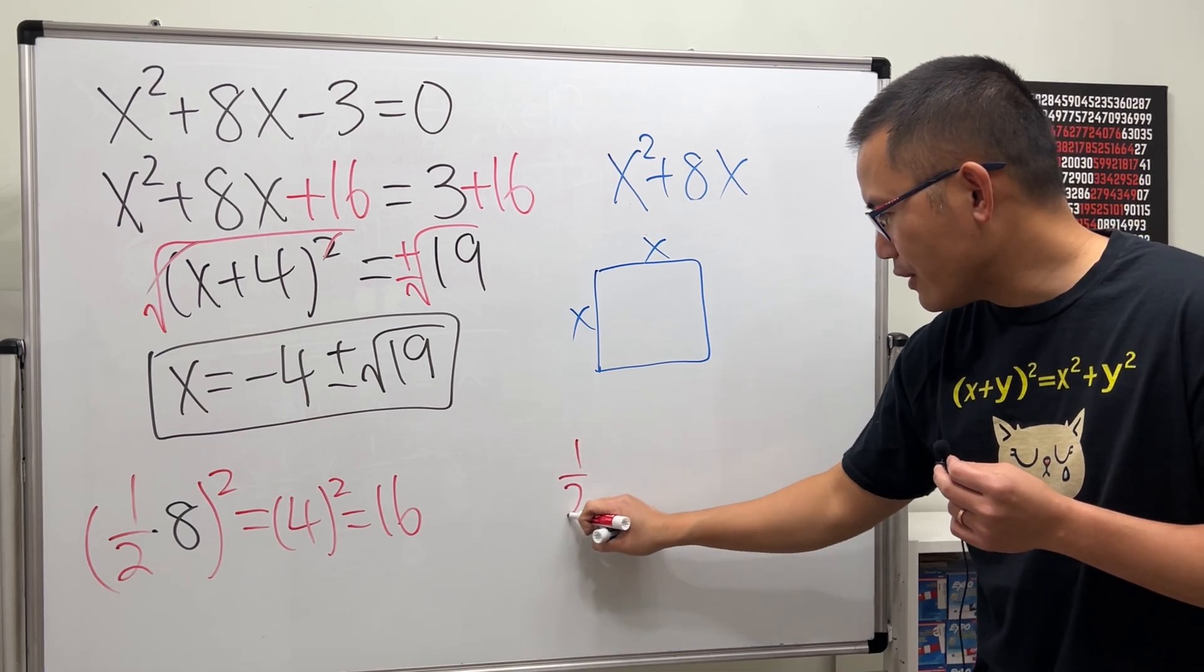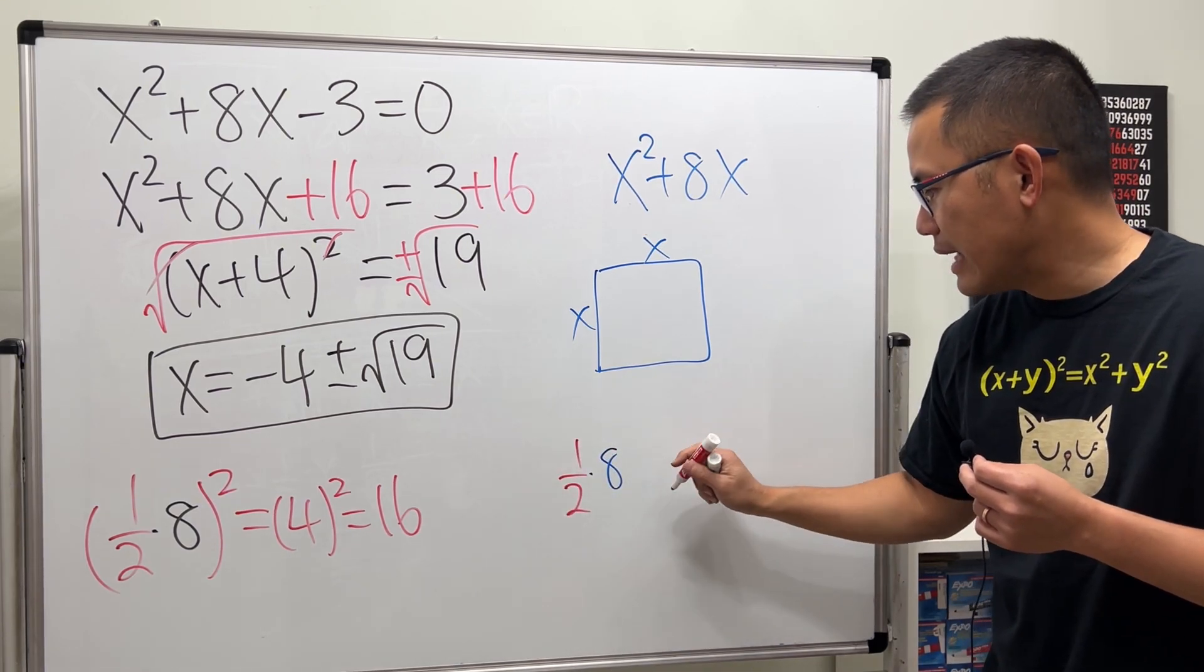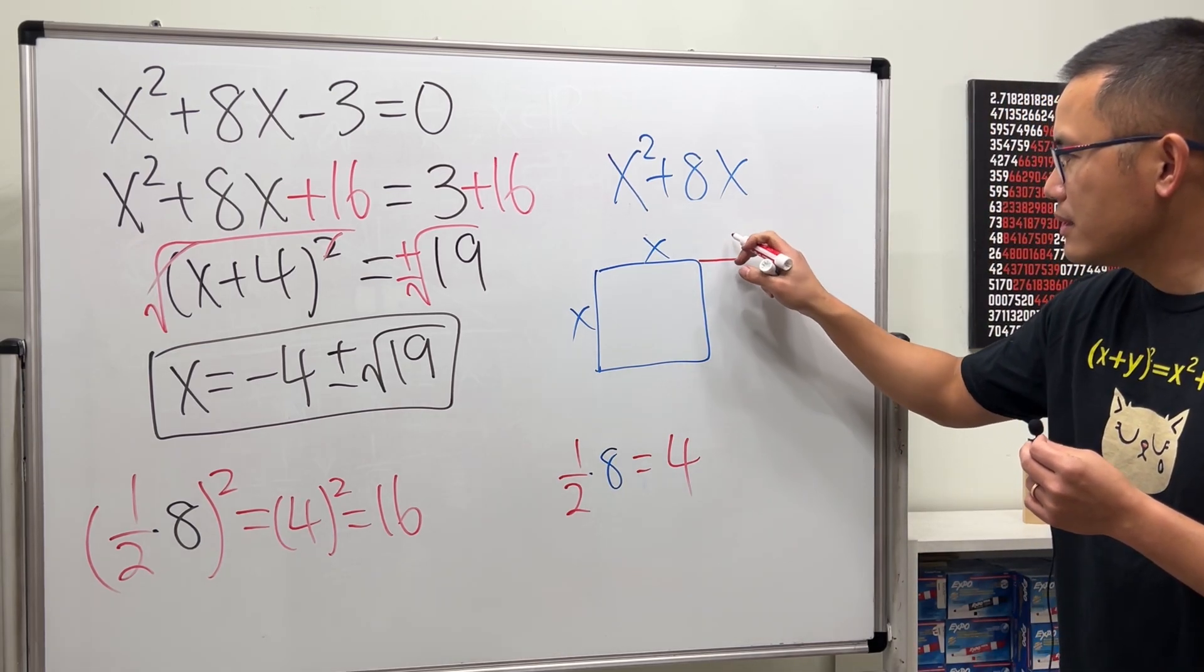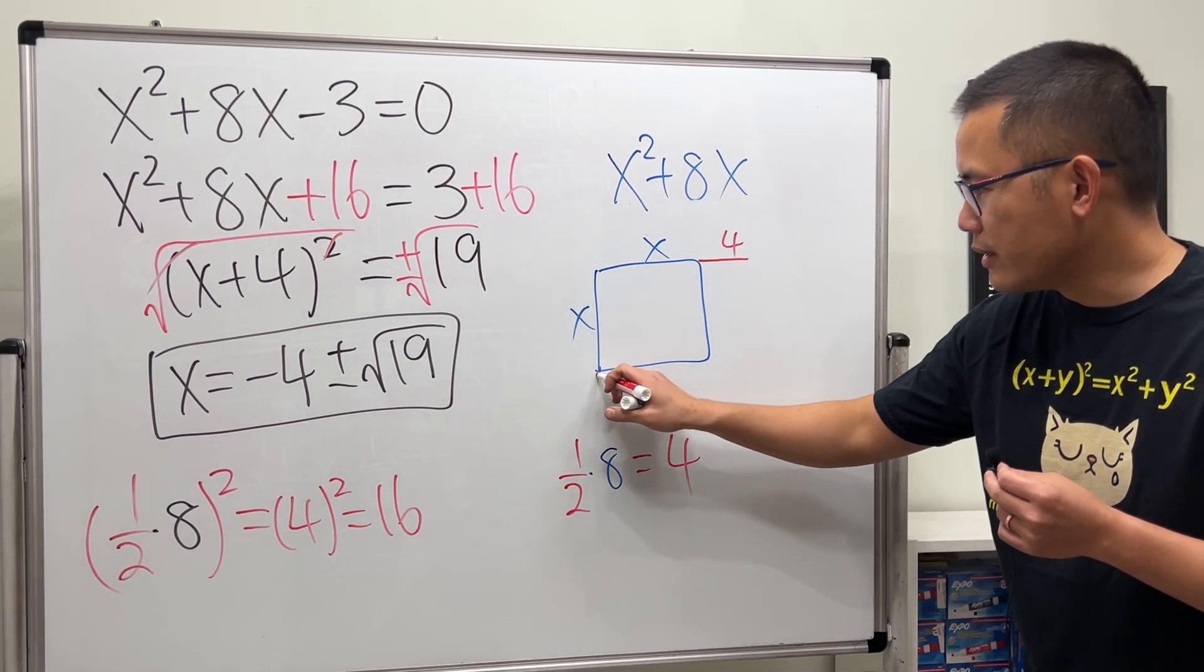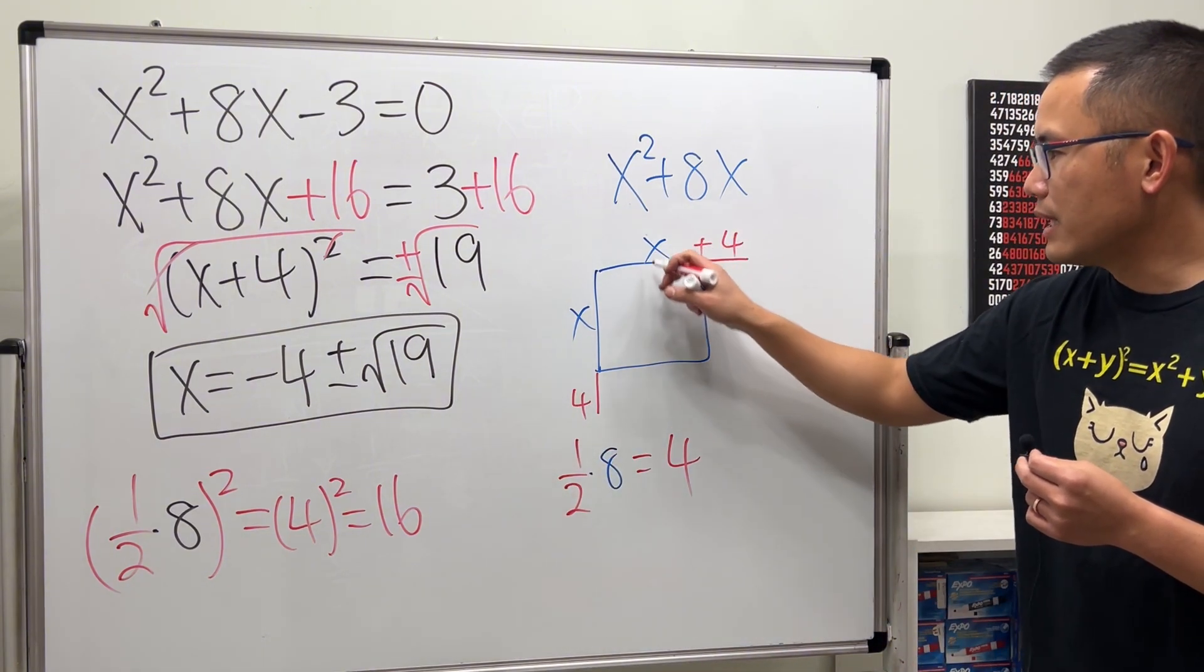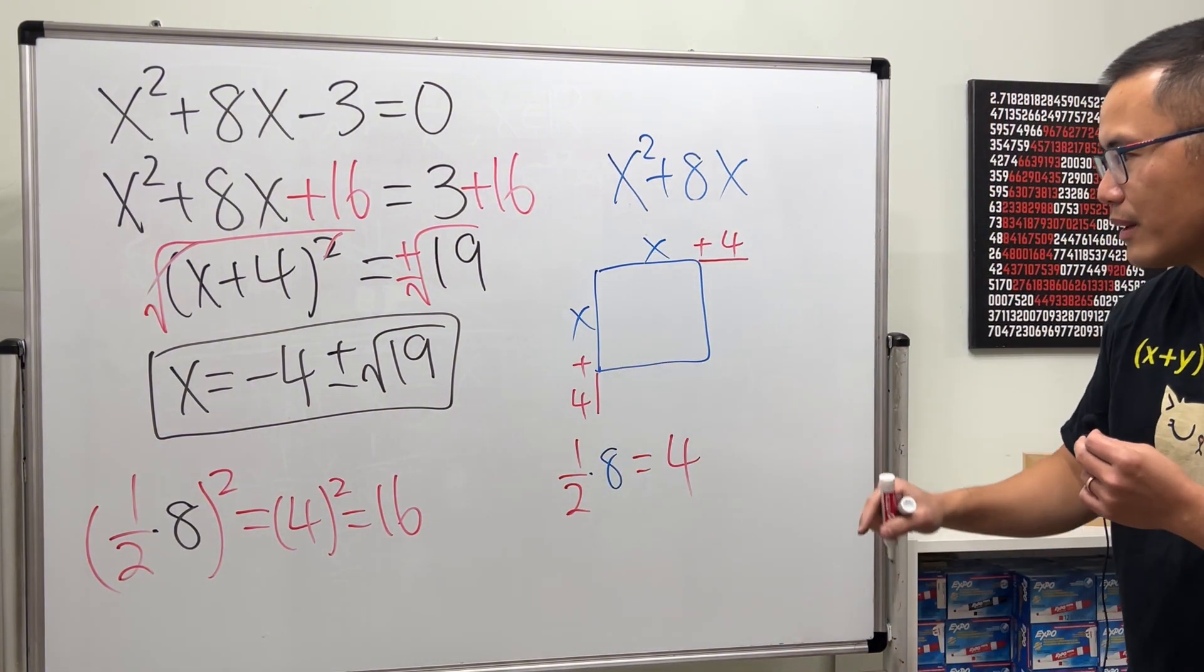If we take half of 8, that will give us 4. So I'm going to put 4 right here, and then I'm going to put another 4 right here. Together I'm adding that with x.